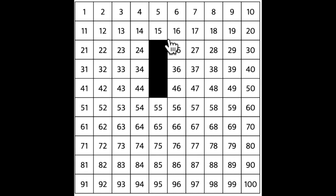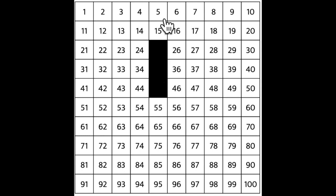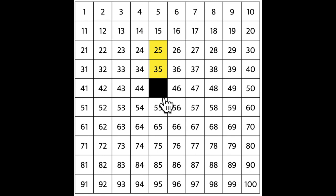We count by tens. That means the number on the right — the ones place — will stay the same. In every box it should have a five in the ones place. But the number on the left, the tens, will move up by one. Let's count up by tens: 5, 15, 25, 35. What do you think comes next? 45.